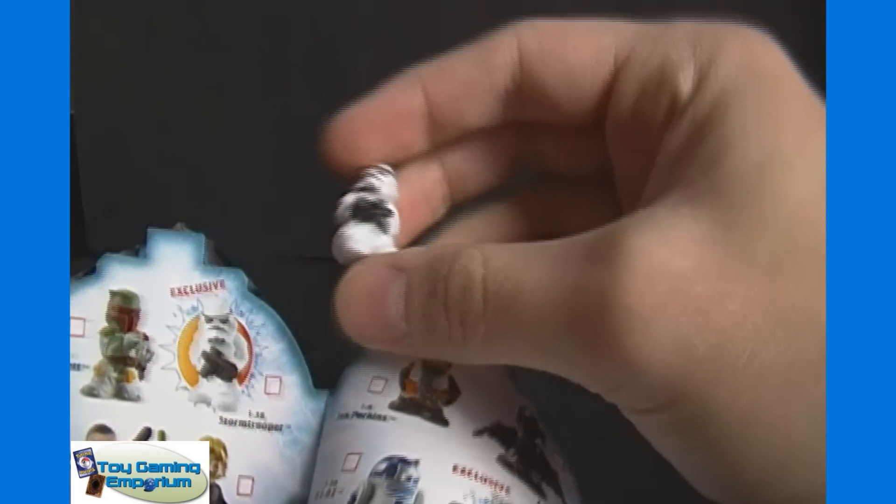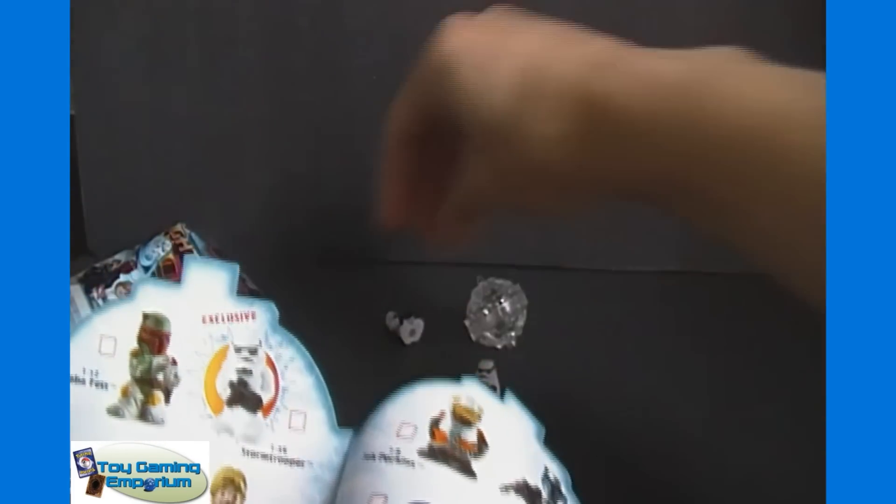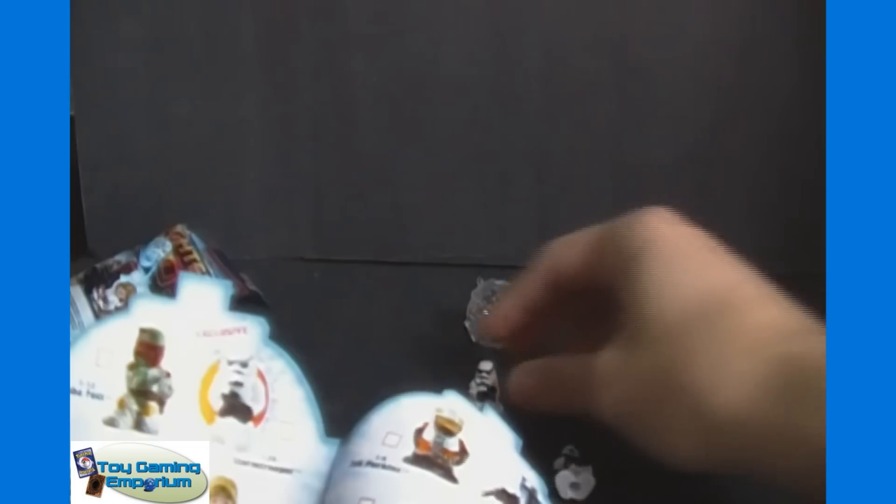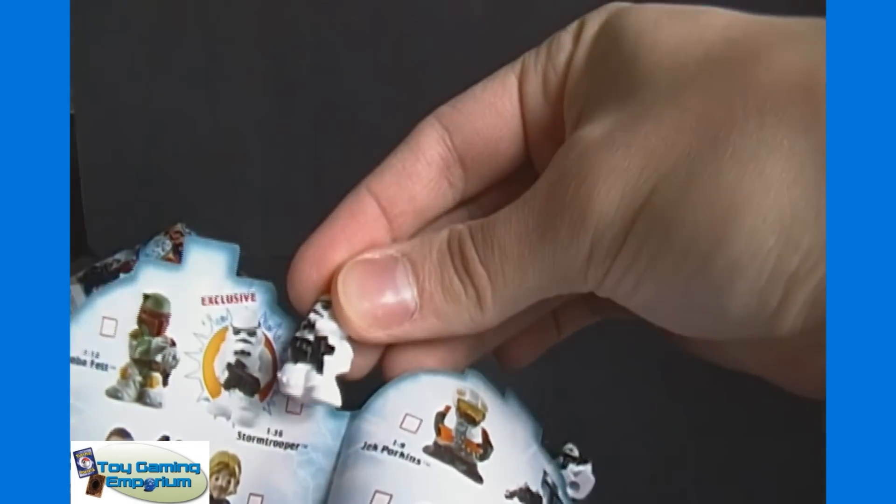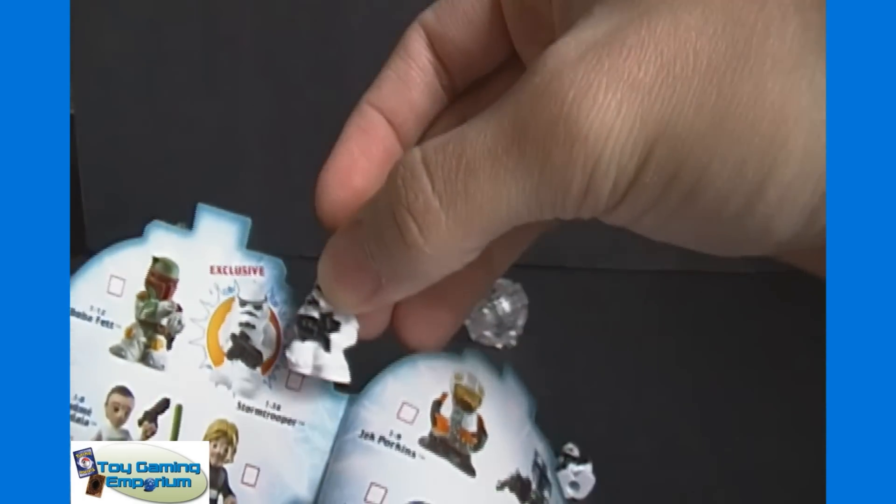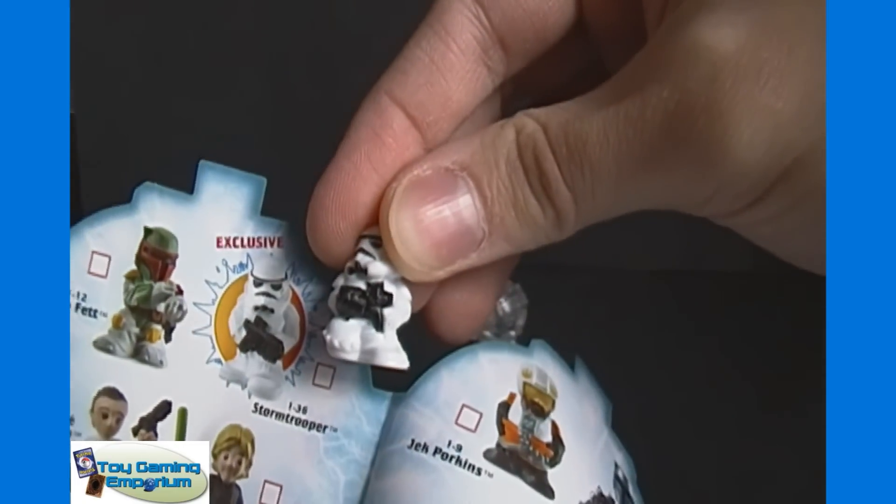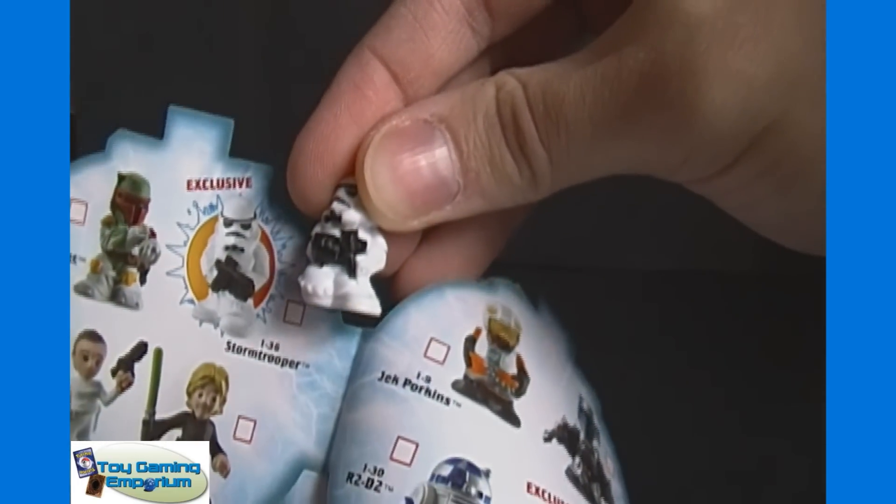So looks like we got a pretty big checklist here. It shows exclusives. I think we got one of them. Let's see. That's not the one. That's not it here. Looks like that one's a mirror image of this one. But perhaps that is the right one. This is I, or one, probably one for series, series one.